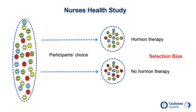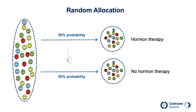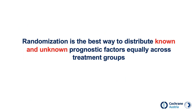We can prevent selection bias if everyone in a study has the same probability to be allocated to the treatment or the control group. The easiest way to achieve this is by flipping a coin, which is the simplest form of randomization. It will lead to an equal distribution of participants' characteristics between two groups. Randomization is the best way to distribute known and unknown prognostic factors equally across treatment groups.